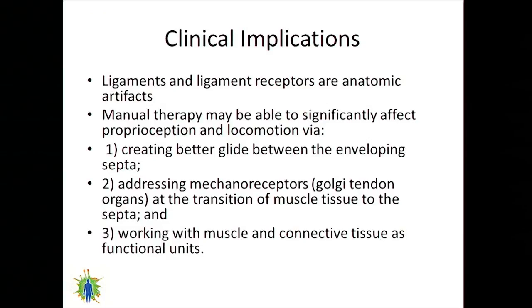The clinical implications are that ligaments and ligament receptors are anatomic artifacts. What really happens during manual therapy is we may be creating a better glide between the enveloping septa of the muscle, addressing mechanical receptors like the Golgi tendon organs at the transition of muscle tissue to the septa, and working with muscle and connective tissue as functional units — not isolated parts, but a whole connected process.